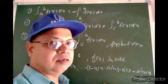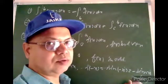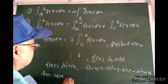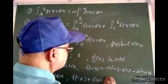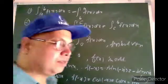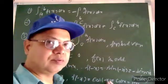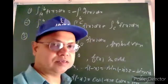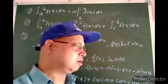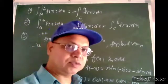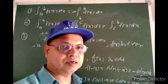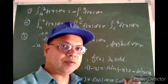If replacing minus x in place of x the function becomes negative, that type of function is called an odd function. For example, if f(x) = cos x, then f(minus x) = cos(minus x) = cos x = f(x). By replacing minus x in place of x the function becomes the same; that type of function is called an even function. If the function becomes the same, it is even; if it becomes negative, it is odd.